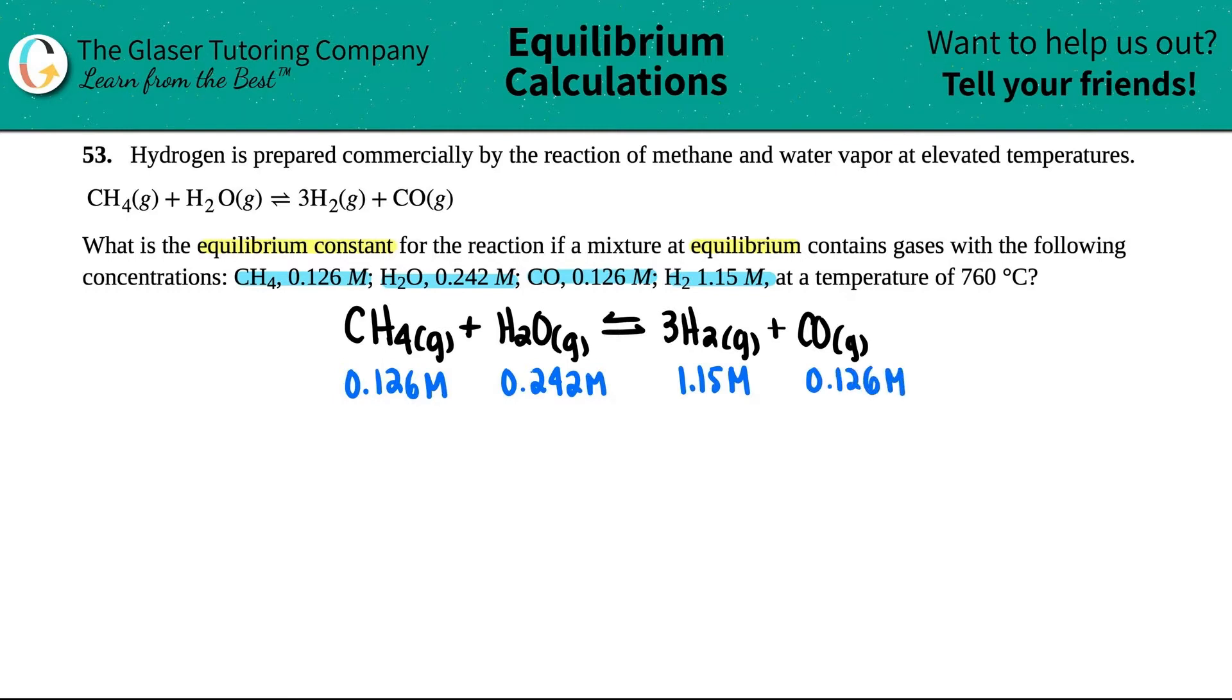Now, just make sure that you write down or say in your mind what these values are. Are they initial values? Are they at equilibrium? Or are they change from initial to equilibrium? They did state here that a mixture was at equilibrium and it contained these concentrations. So these are equilibrium values. It may not seem important now, but once we do harder practice problems, it's going to make much of a difference. So I'm just trying to get you into the harder type of problems.